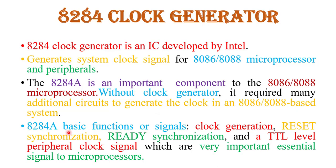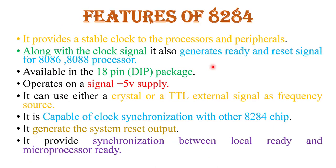The basic functions of the 8284 clock generator are: it generates clock or timing signals for the 8086 or 8088 microprocessor, it produces reset synchronization signals, ready synchronization signals, and TTL level peripheral clock signals, which are very essential and important signals for the 8086 microprocessor.